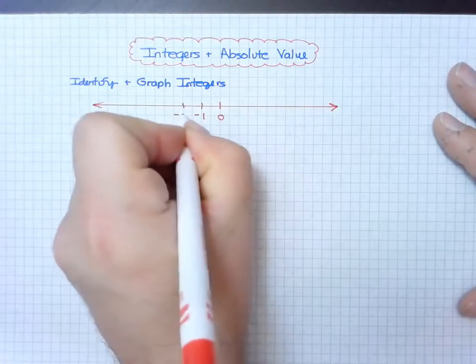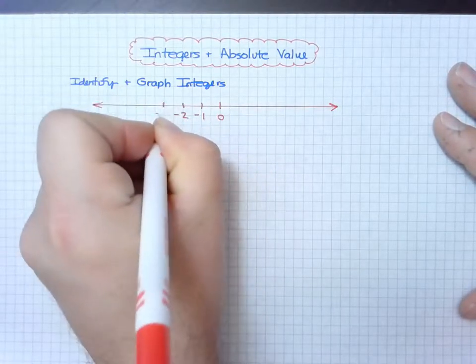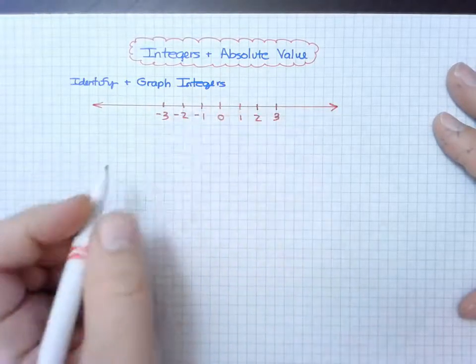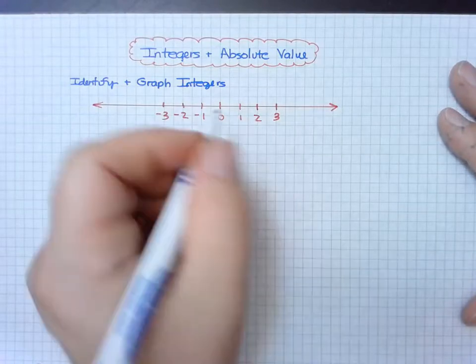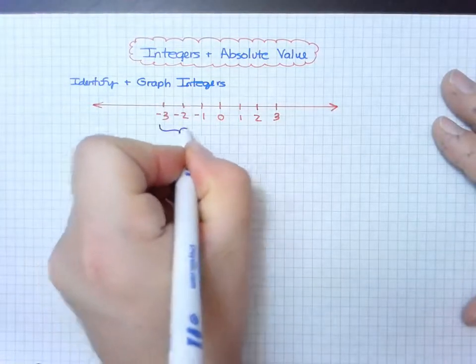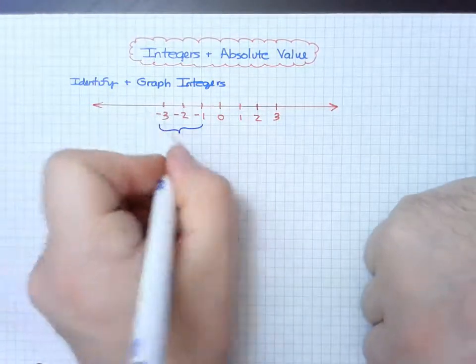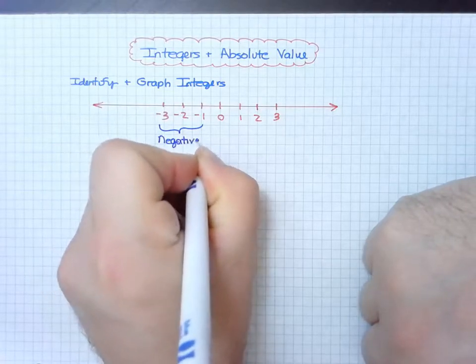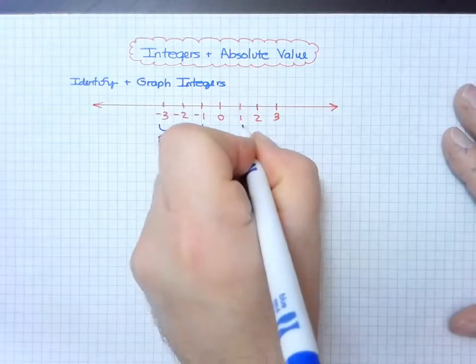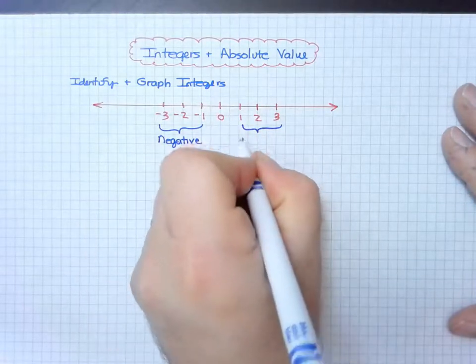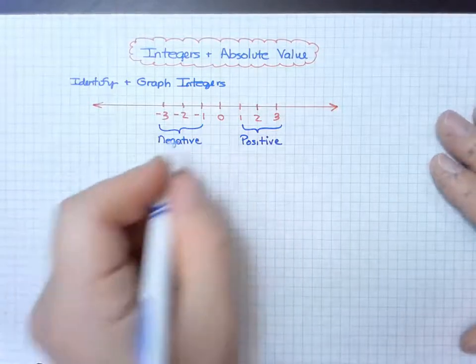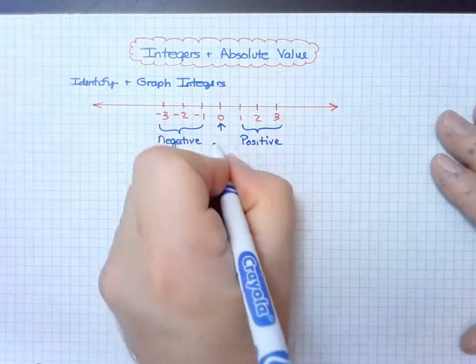I'm going to go a couple units in each direction. Notice that we have our set of negative numbers, negative integers, and we have our set of positive integers. While zero is also an integer, it's neither negative nor positive.